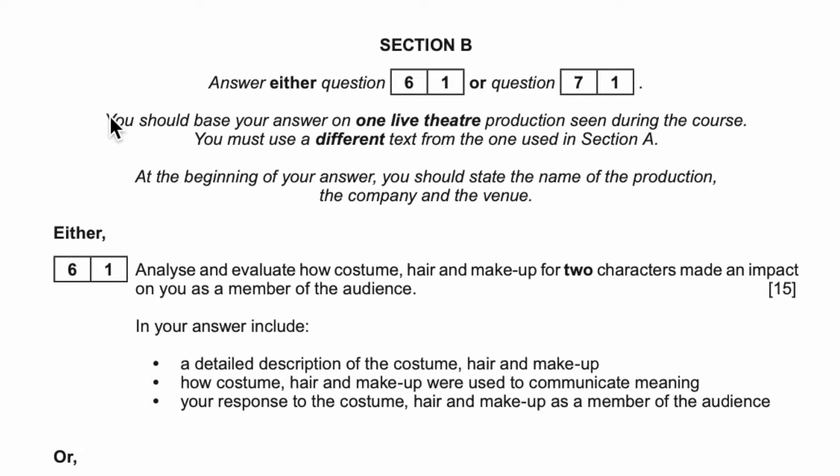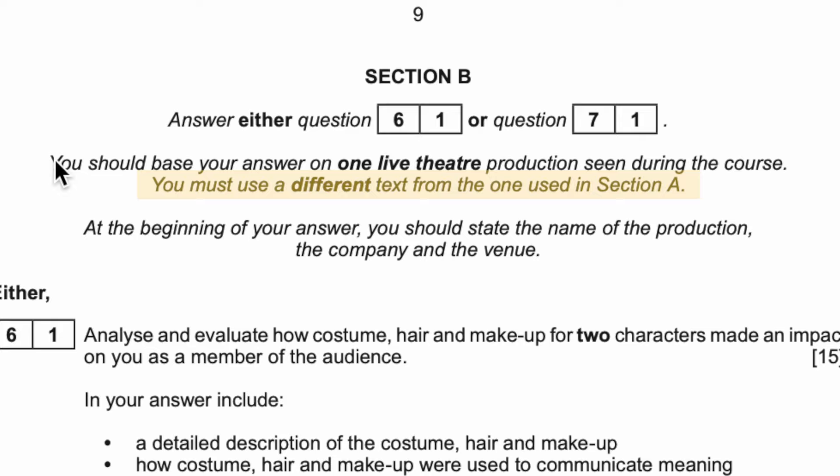Moving into section B, you'll note it says you should base your answer on one live theatre production that you've seen during your course. But this is really important: it has to be different from the play that you studied in section A. So if you studied Refugee Boy for section A, you can't go and see Refugee Boy and reference it for section B — it has to be something completely different.